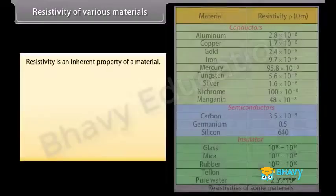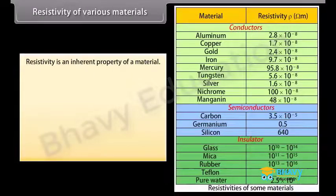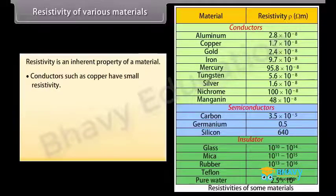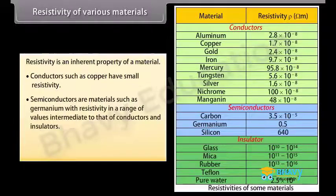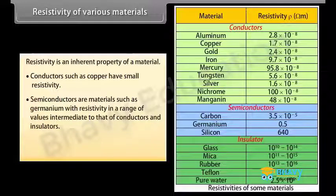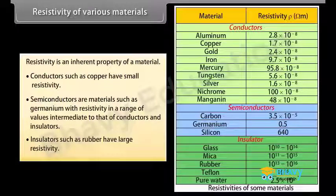Resistivity is an inherent property of a material. Conductors such as copper have small resistivity. Semiconductors such as germanium have resistivity in a range intermediate to that of conductors and insulators. Insulators such as rubber have large resistivity.